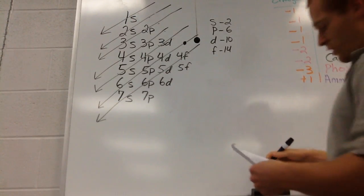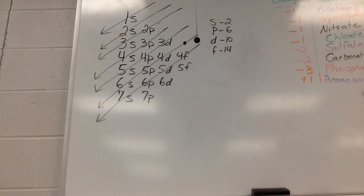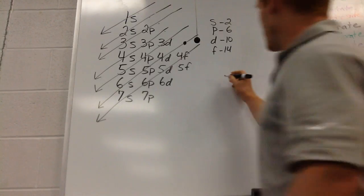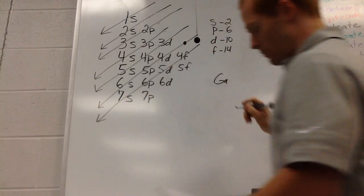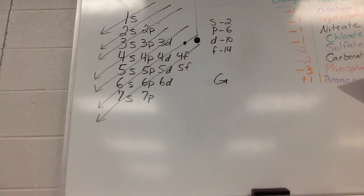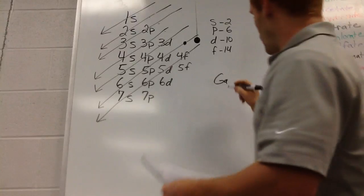Okay, so we're going to do electron configuration. We are first going to do gallium. So Ga is gallium. It is in group 13 and its atomic number is 31.